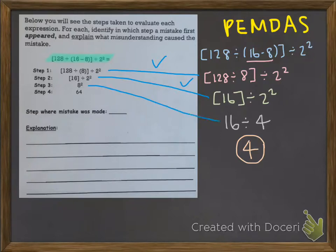Hmm. So as I compare these two, I'm noticing a problem. Here they have 8 squared, and we have 16 divided by 4. Well, we know that we solved the problem correctly because we followed PEMDAS. The step where the mistake was made for them is step 3. Now we need to figure out why. What did this person do incorrectly?